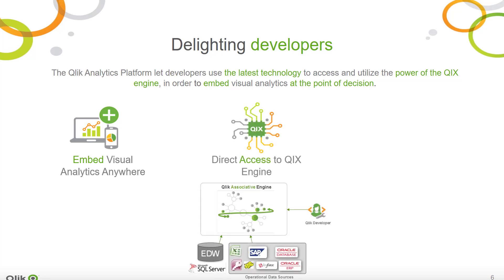Direct access to the Qix engine: The Qlik Indexing engine, or Qix, is the world's most powerful associative data indexing engine. It can ingest data from any source and provides rapid access to all of it, performing calculations and aggregations on the fly. The Qix engine ensures that analytics are fully interactive and stay in context together.